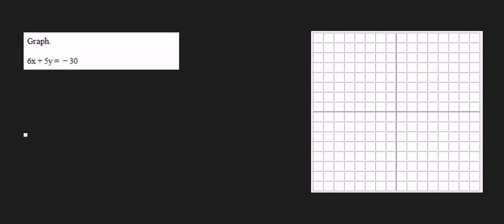Okay, here's another graphing question. You notice once again that the equation is in this form, ax plus by equals c. And when it's in that form, finding the x and y intercepts is usually pretty easy. So let's do that.